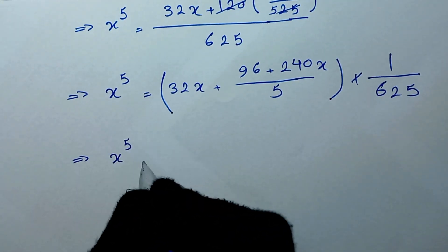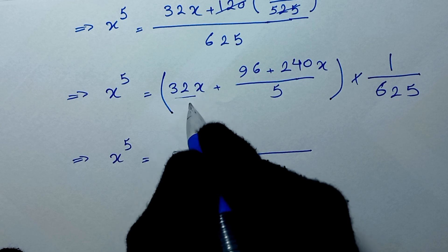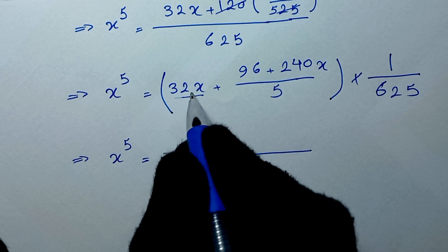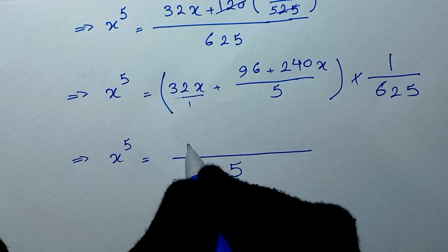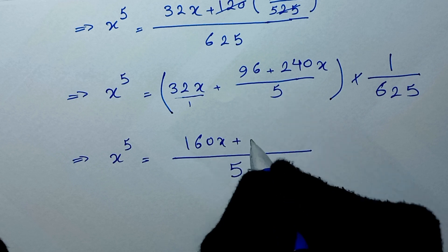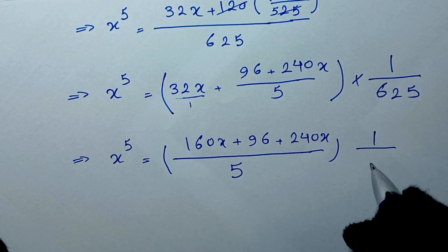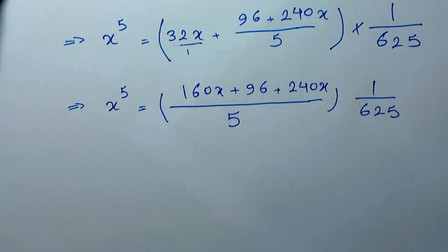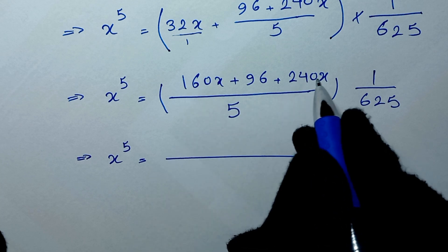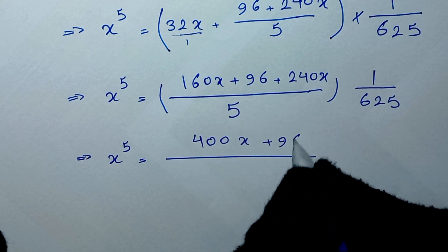In the next step, x to the power of 5 equals 32x plus 96 plus 240x, all over 625. Taking the common denominator of 5, 32x becomes 160x over 5. So x to the power of 5 equals 160x plus 240x plus 96, all times 1 over 625, which gives x to the power of 5 equals 400x plus 96, over 625.